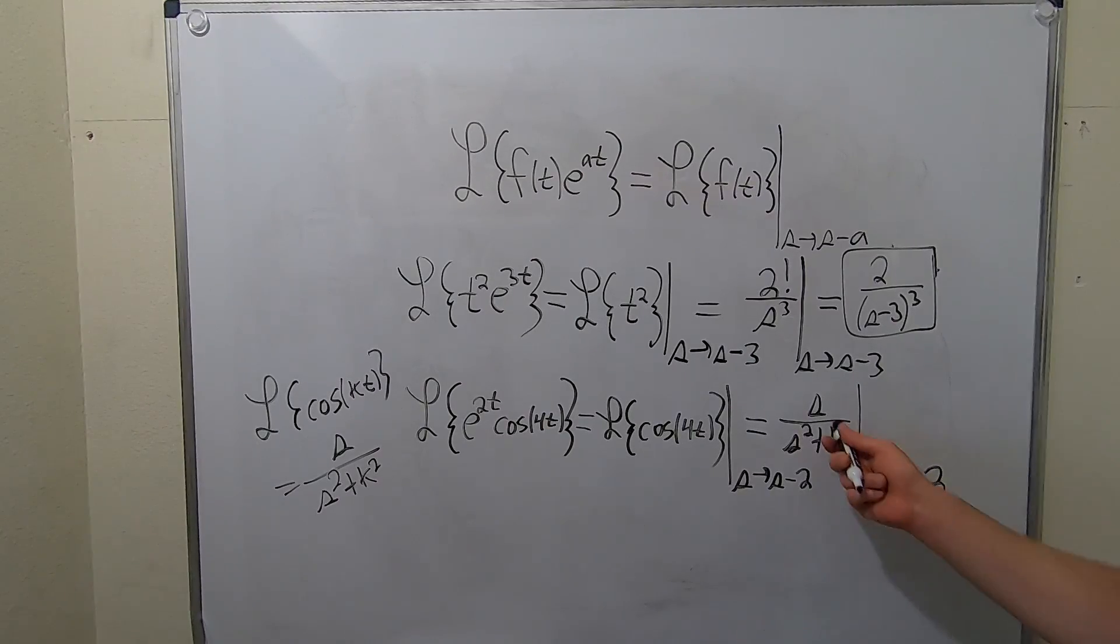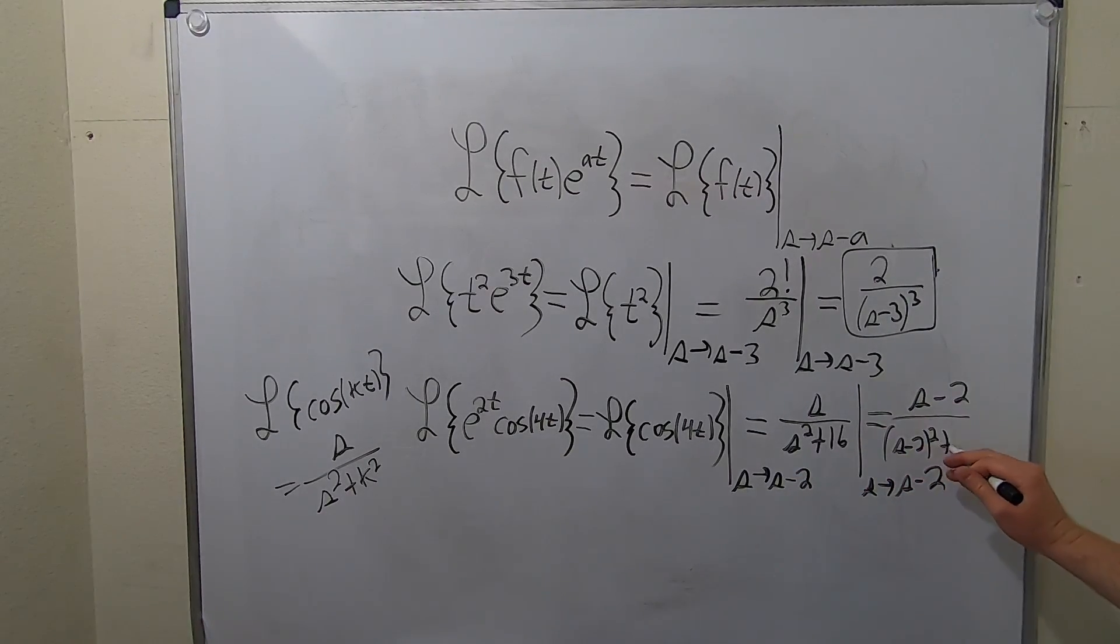Now you simply replace all of the s's with s minus 2's. This will be equal to s minus 2. Here we have s minus 2 squared plus 16. And that would be the final answer.